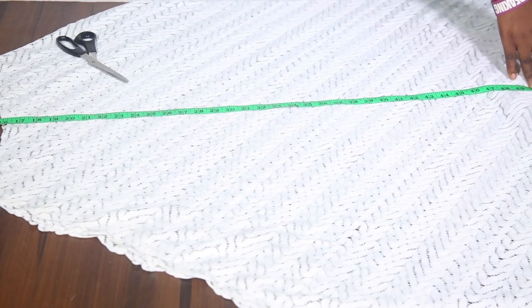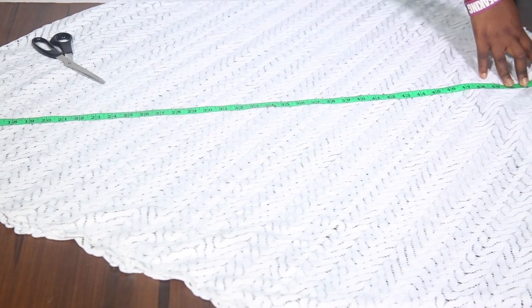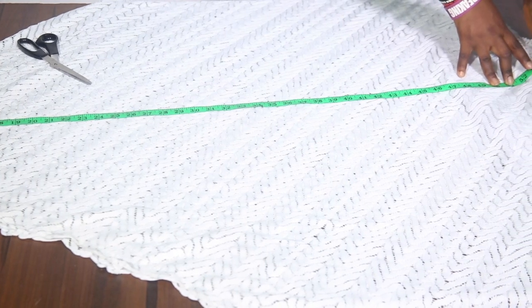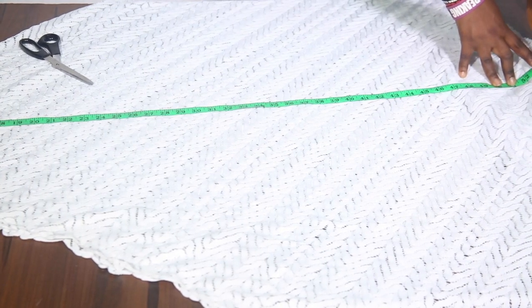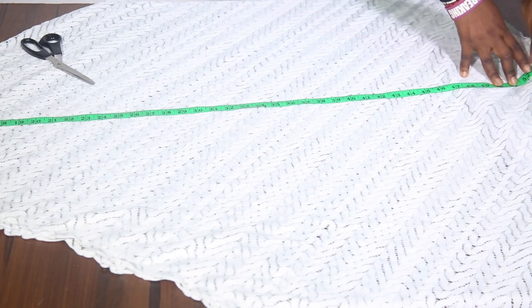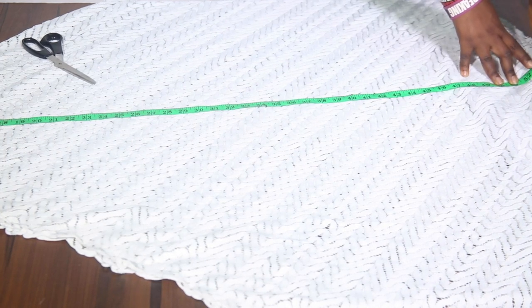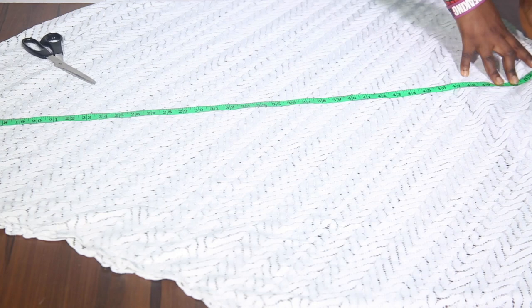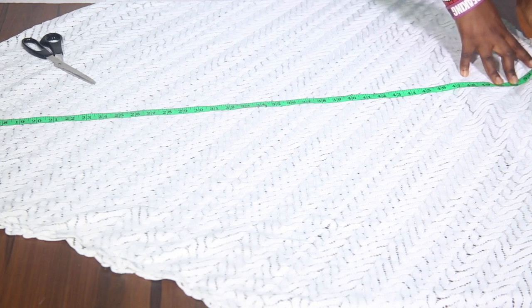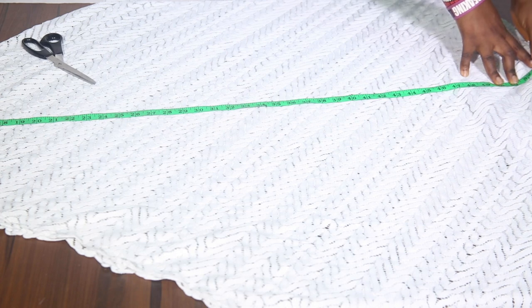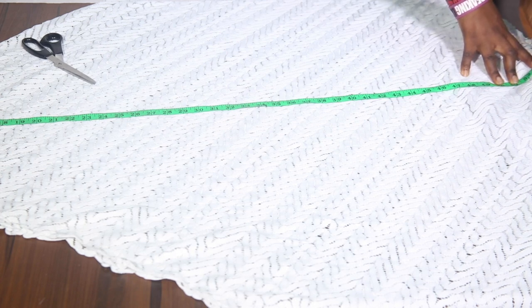Now for the remaining length, I reduced the length by 6 inches. So 6 inches is subtracted from this length. That's because I'll be replacing that with a chiffon fabric. So I brought out my length from here and I cut out my single flare.